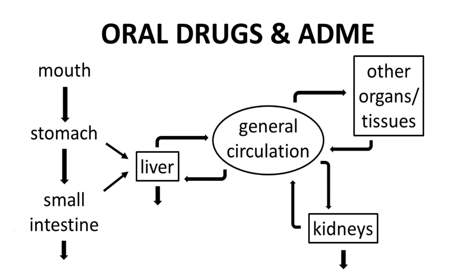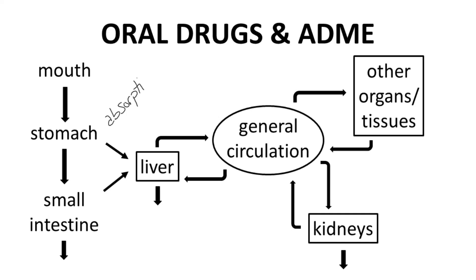Depending on the properties of the drug, it may cross the lining of the stomach and/or the small intestine and enter the blood of the hepatic portal system. This process is called absorption — the A in ADME. If any drug is not absorbed, it will simply exit the body in the feces.